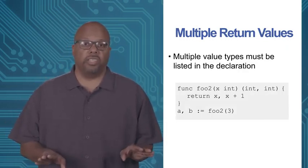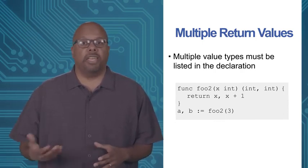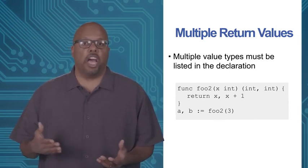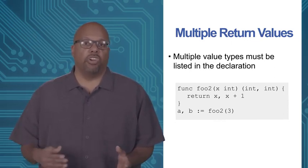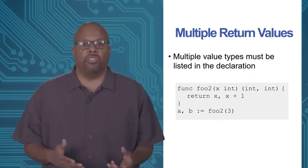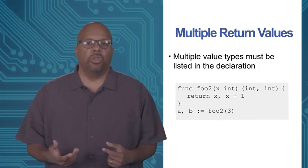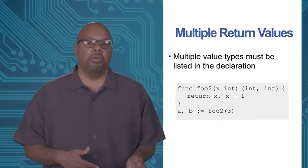You can also have multiple return values. In this example, foo2 has two return values. In the declaration, after the argument x int, you see another set of parentheses with int comma int — meaning two return values, both integers. The code says return x comma x plus 1, so the first return value is x and the second is x plus 1. When calling foo2 with 3, you write a, b := foo2(3). a will be bound to 3 and b will be bound to 4.